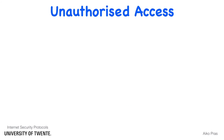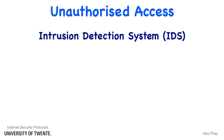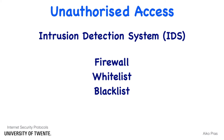To detect unauthorized access, the security officer may install an intrusion detection system, or IDS. To prevent unauthorized access, the network manager may install a firewall or use a whitelist which limits access to only well-known sources, or a blacklist which prevents access from certain sources. A specific tool to protect against SSH brute force attacks is fail2ban.